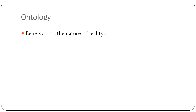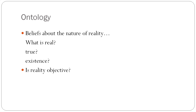So let's break them down. Ontology involves our beliefs about the nature of reality. So what is real? What is true? What is existence, or what can exist? Also, is reality objective? And taking it one step further — is there only one reality?